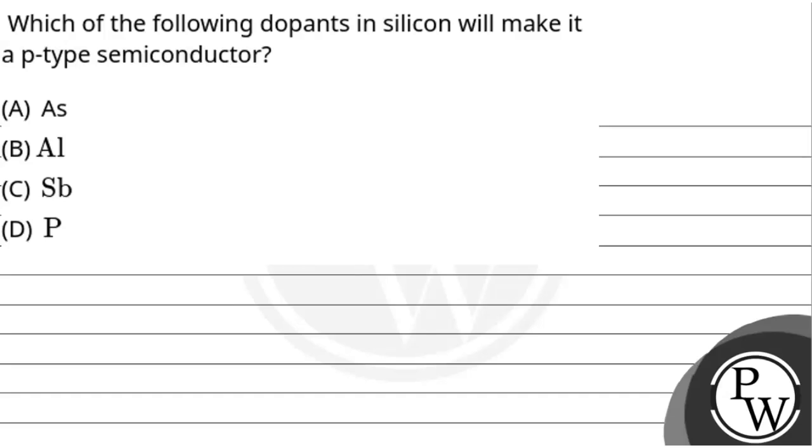Hello guys, let's read this question. The question is: which of the following dopants in silicon will make it a p-type semiconductor? Which dopant will make a p-type semiconductor in silicon? So let's write our key concept here.